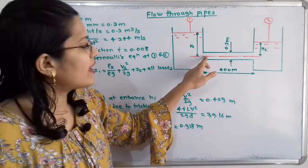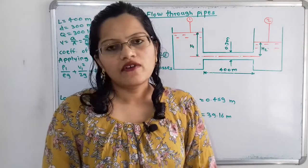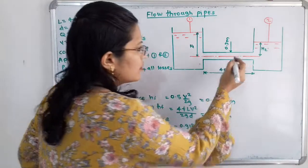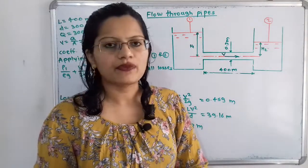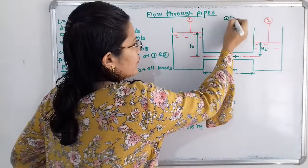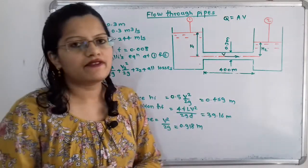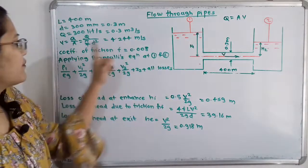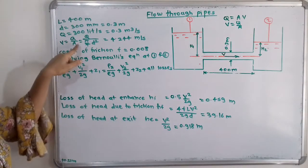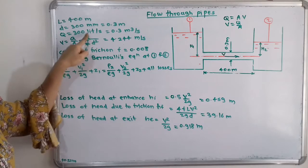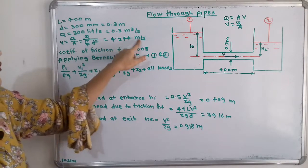Now we need to find the velocity of water flowing through the pipe, since velocity V is not given in the data. We know that Q equals area times velocity, where area A equals π/4 × D². So V equals Q divided by A, which equals Q divided by (π/4 × D²). Substituting the values of Q and D, we get V equal to 4.244 m/s.